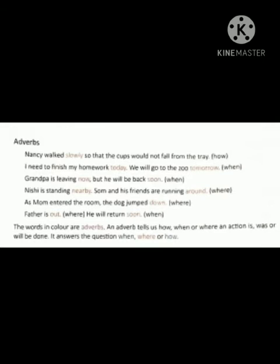Now let us see some sentences. Nancy walked slowly so that the cups would not fall from the tray. Here the word 'slowly' tells us how the action happens. I need to finish my homework today. We will go to the zoo tomorrow. Here the words 'today' and 'tomorrow' tell us when the action will be done.